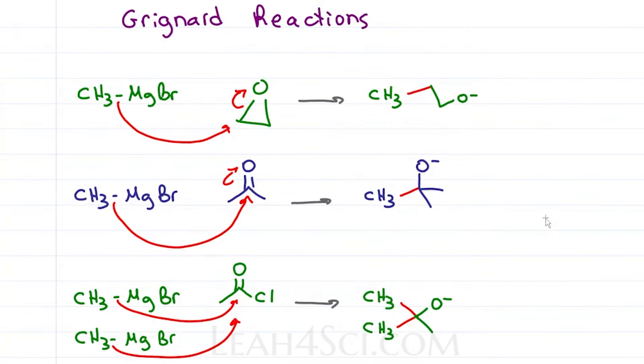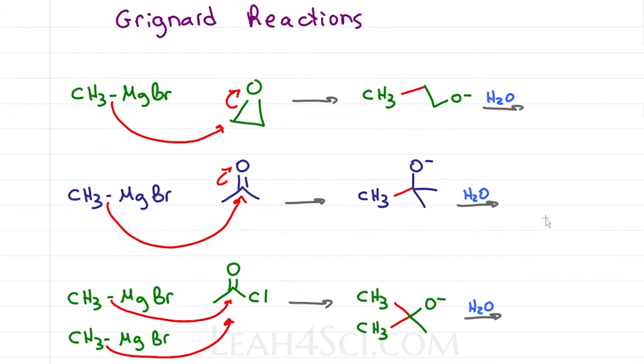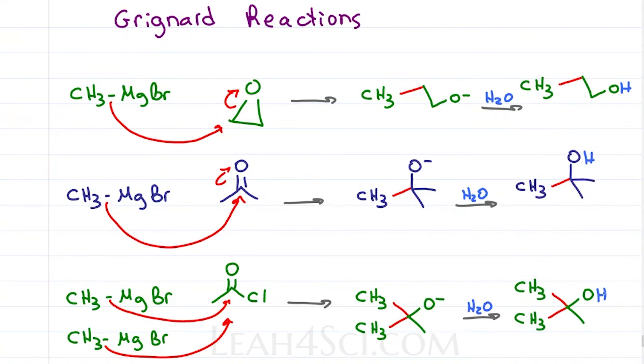In each situation, after the Grignard attacks we're left with an O-, that we need to add a source of protons for a neutral alcohol product. Only add the water after the Grignard completed the reaction, meaning in step 2, so that you don't inadvertently destroy the Grignard by adding the water too soon.